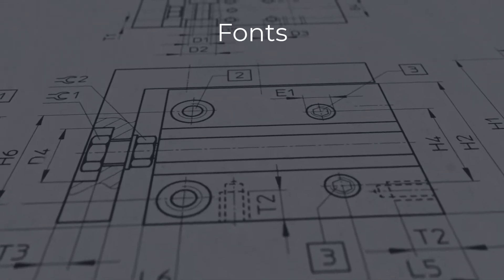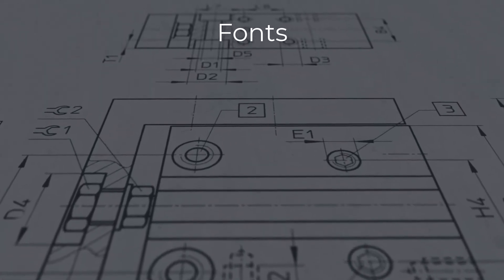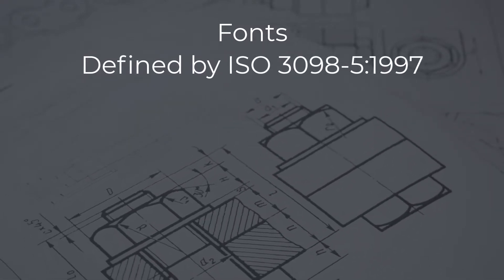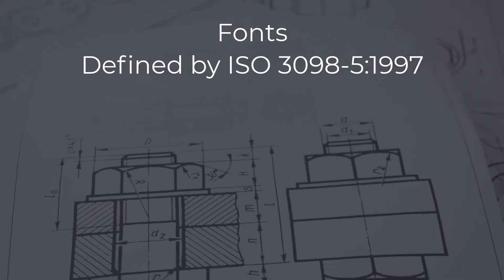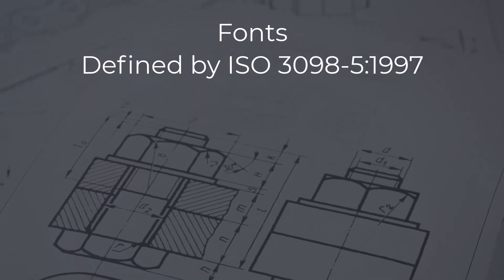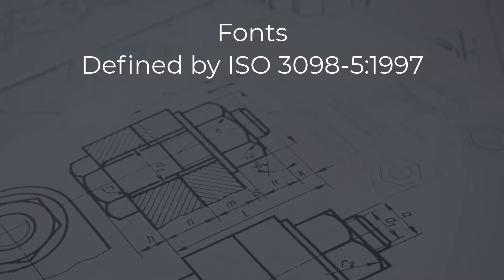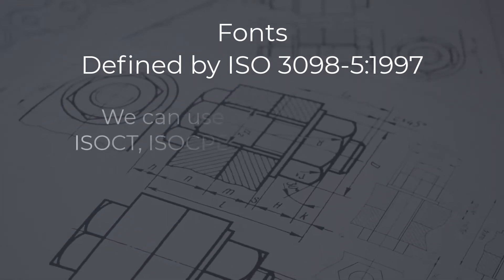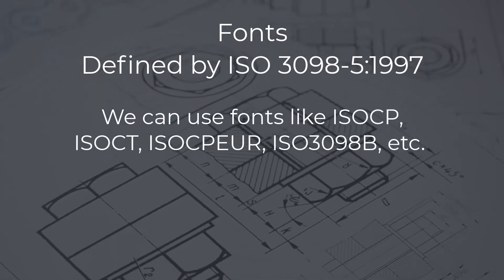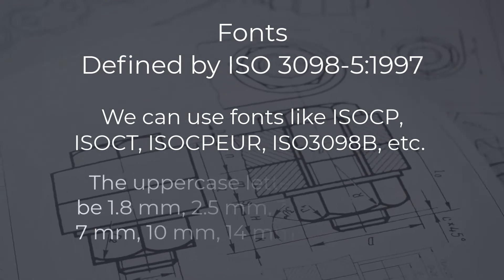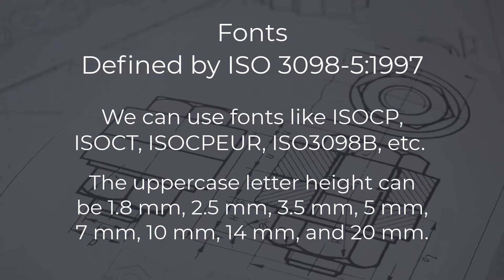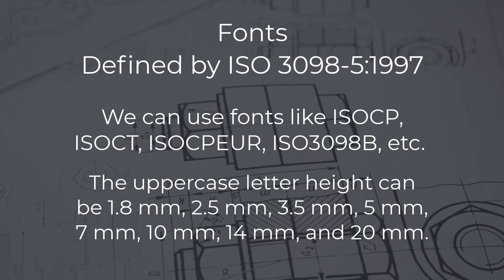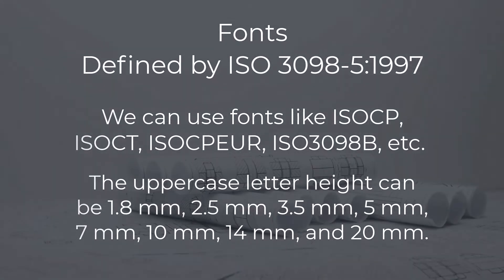Font. The font types used on engineering drawings for CAD applications are defined by ISO 3098-5:1997. According to ISO, CA and CB font types should be used for CAD applications. Usually on drawings generated in CAD software we can use any font we want, but sometimes different projects and companies will require standardized fonts. The uppercase letter height can be 1.8mm, 2.5mm, 3.5mm, 5mm, 7mm, 10mm, 14mm, and 20mm.